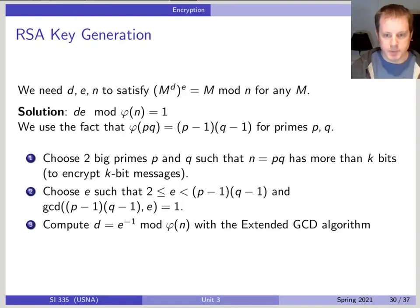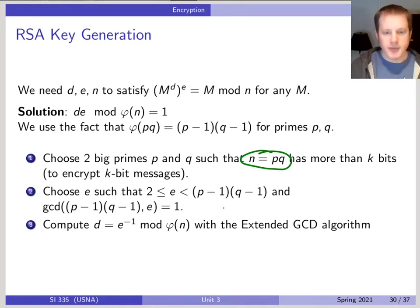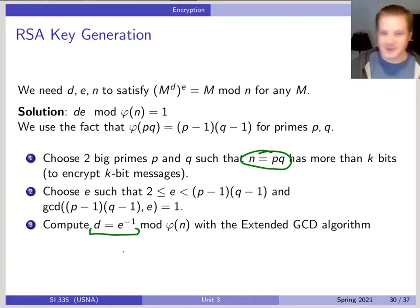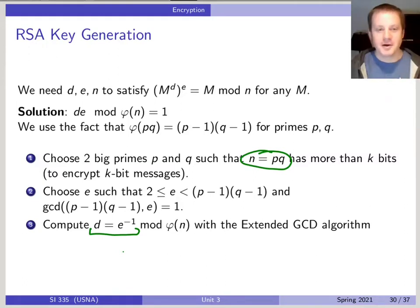That's how key generation works. We pick our n first, which is going to be the product of two big primes — there are security reasons for that, but also we need to be able to compute φ(n). We use that information to compute the modular inverse of the public exponent, which gives us the private exponent. This is why totient matters, why modular exponentiation matters, and why modular inverse matters — they all come together in RSA.